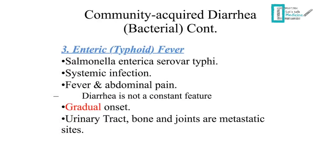The third classification is enteric or typhoid fever, caused by Salmonella enterica serovar Typhi. It is a systemic infection involving multiple organs. Fever and abdominal pain are the main symptoms, while diarrhea is not a constant feature — the patient may have diarrhea only once or twice during the whole course. The disease has a gradual onset. Metastatic sites include the urinary tract, bones, joints, and other organs.